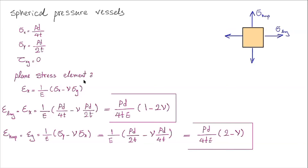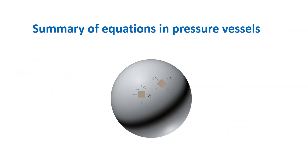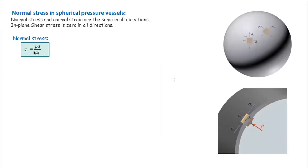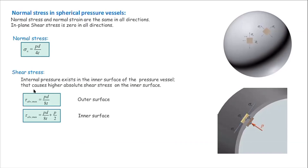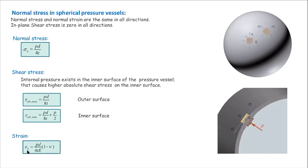If someone wants to determine the deformation in any direction, they need to simply multiply the strain by the length in that direction. Let me now summarize the equations for spherical pressure vessels. Normal stress is Pd divided by 4t. There is no shear stress on the outer surface element, but there will be out-of-plane maximum shear stress. For the element on the outer surface, the maximum absolute shear stress is Pd divided by 8t. For the inner surface, because of the internal pressure acting on that element, there will be one additional term, and the magnitude of strain is calculated from the corresponding equation.